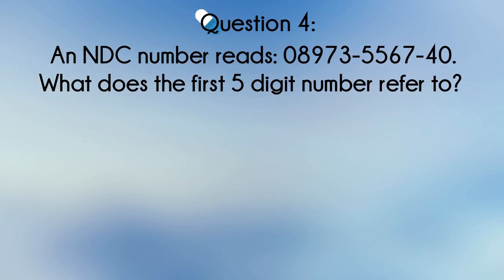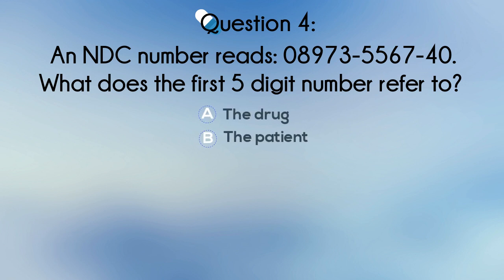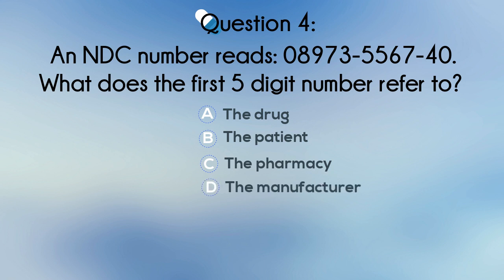Question 4. An NDC number reads 08973-5567-40. What does the first five-digit number refer to? A. The drug. B. The patient. C. The pharmacy. Or D. The manufacturer.